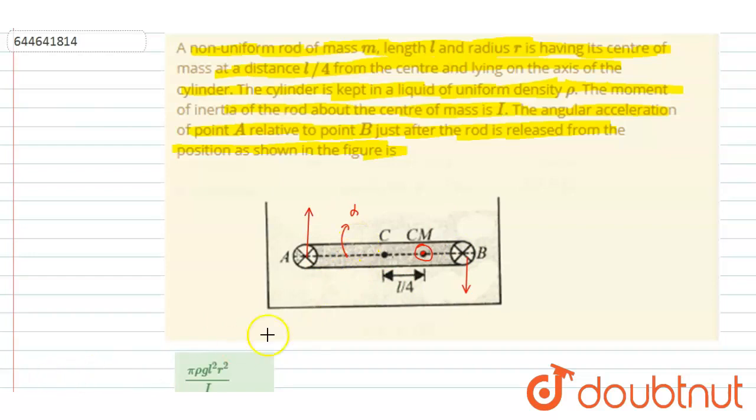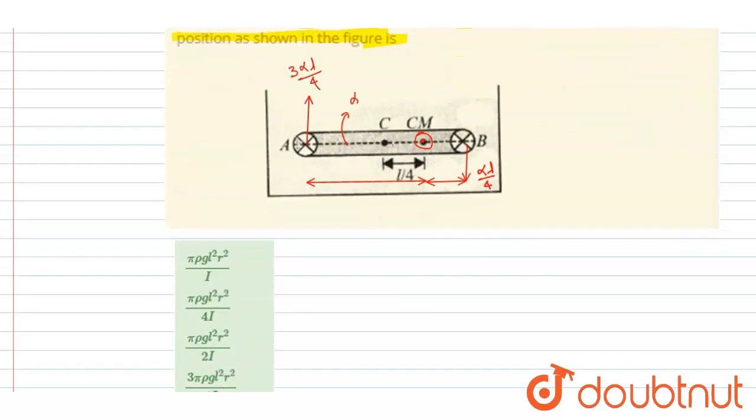If you see, this distance is 3L by 4 and this distance is L by 4. So the acceleration will be alpha times 3L by 4, and the acceleration of point B will be alpha times L by 4. The acceleration of A with respect to B, where the distance between the two points is L.